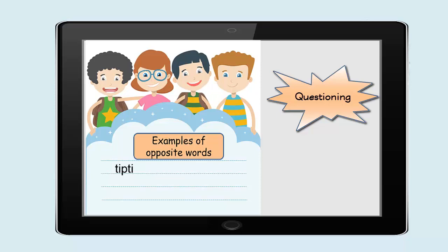Opposite of Tchipti — Grand. Opposite of Vide — Rempli.